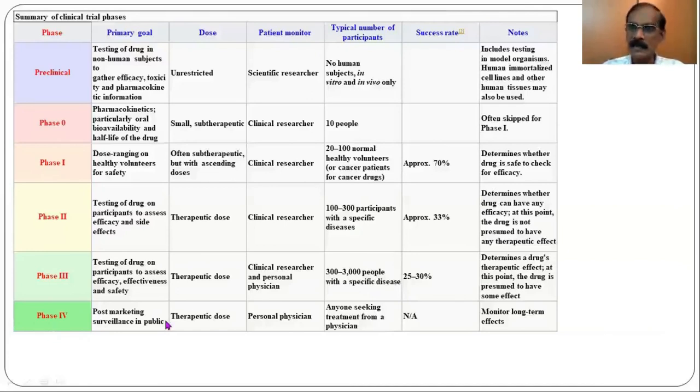What is mathematical induction says? We have to prove the statement for n equal to 1. In the case of landing to moon, insects. In the case of drugs, it is 20 to 100 normal healthy volunteers. Phase 2, Step 2 is, we have to assume for n equal to k in mathematics. We have to assume the statement for n equals to k.